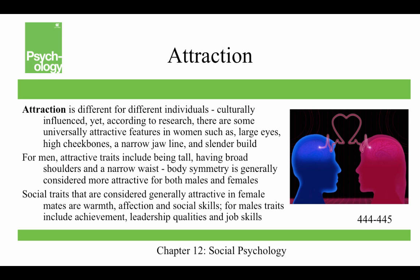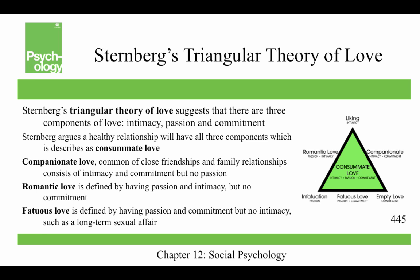The matching hypothesis asserts that people tend to pick partners they view as equals in physical attraction and social desirability. Sternberg's triangular theory of love suggests there are three components of love: intimacy, passion, and commitment. A healthy relationship has all three — he calls that consummate love — which is different from companionate love, common in close friendships and family relationships, which has intimacy and commitment but no passion. Romantic love has passion and intimacy but no commitment. Fatuous love has passion and commitment but no intimacy, such as a long-term sexual affair.